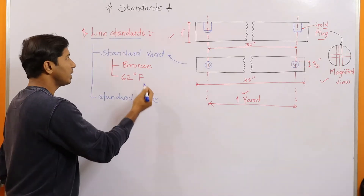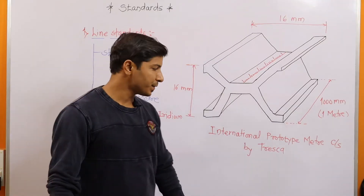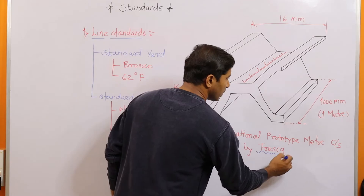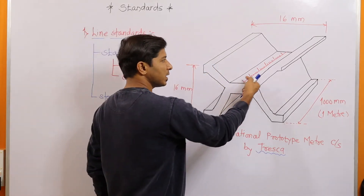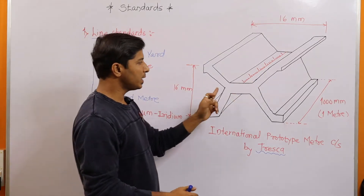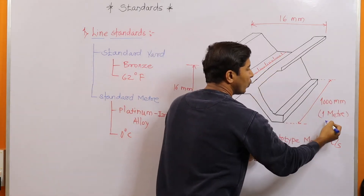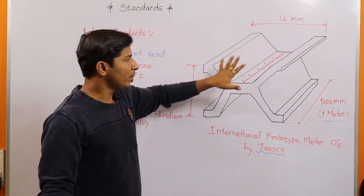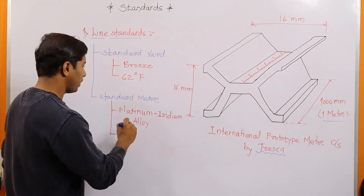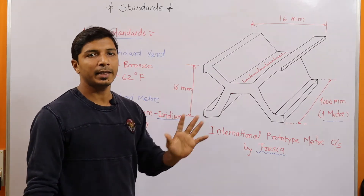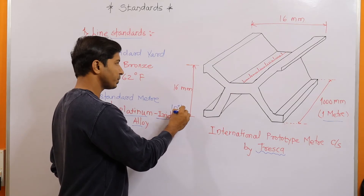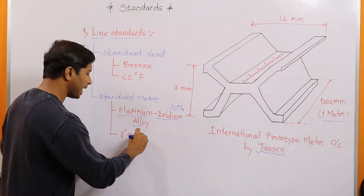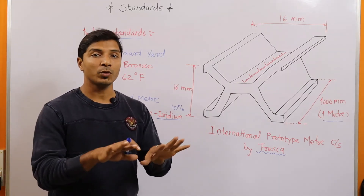Now we'll move toward the second type of line standard, which is the standard meter. This is the international prototype meter cross-section, specified or invented by Tresca. On the polished surfaces of this prototype, lines are engraved, and the distance between these two lines is one meter or 1000 mm. Some other standard distances like 16 mm are also specified. The material used is a platinum-iridium alloy — 90% platinum and 10% iridium. These standards are preserved in specific, well-controlled atmospheric conditions at 0 degrees centigrade and atmospheric pressure.